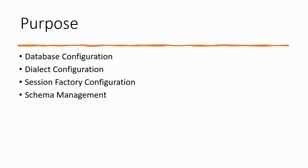The next purpose is schema management. There is an important property here: hibernate.hbm2ddl.auto. The values for it can be update, create, create-drop, or validate. This ensures that if your database doesn't already have the tables or schemas, this property will allow you to create them, and specifies how they should be managed once created.